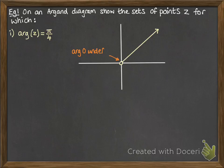Now notice we've got an empty circle down there, because the argument of 0 is undefined, so it can't actually touch the origin there. We leave it as an empty circle.